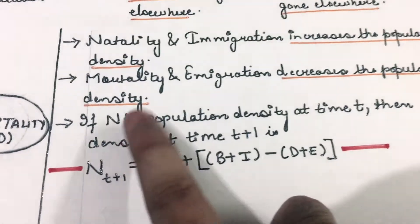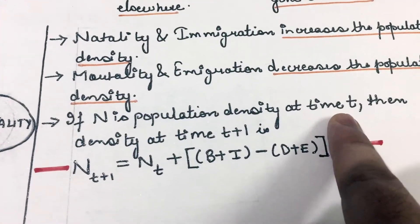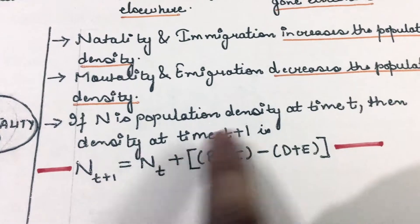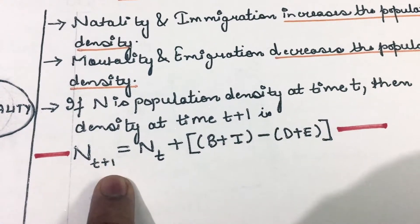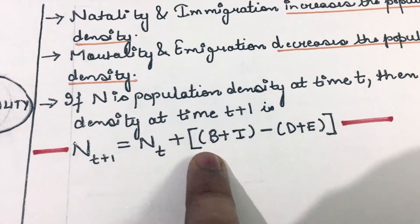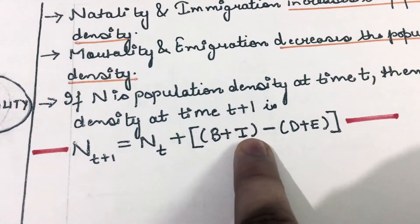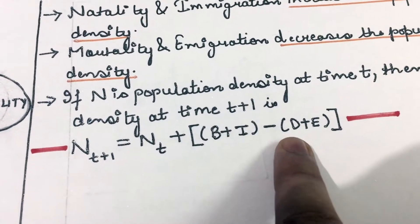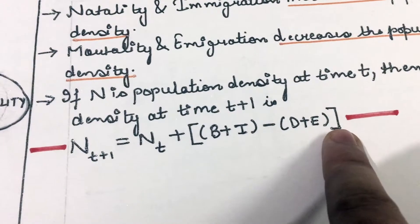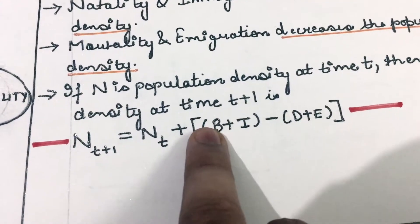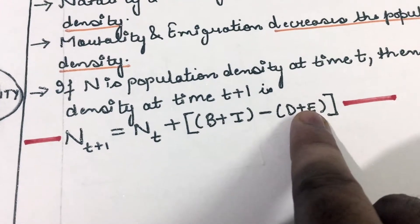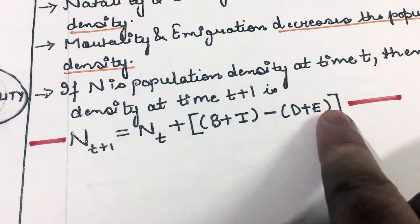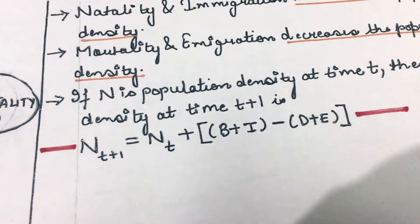So if N is the population density at time t, then population density at time t+1 would be: N(t+1) = N(t) + B + I − D − E, where B refers to natality, I refers to immigration, D refers to mortality, and E refers to emigration.